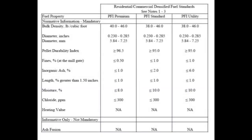Consider how the values you calculated for bulk density, percent moisture, and percent fines compare with the standard values for densified fuels. Also consider differences between the different types of densified biomass you observed. How can you use these procedures to modify and optimize densification processes?